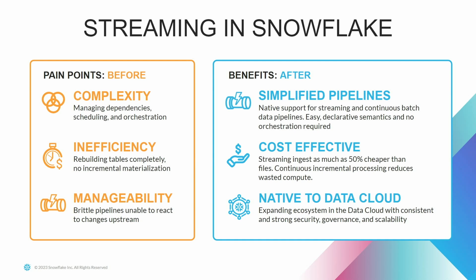That's why we built a simplified data pipeline — no more silos between batch and streaming ingestion. Your data from files and your streaming row sets both come into Snowflake, managed by Snowflake governance, security, and privacy features, and it's cost-effective. Snowflake streaming for streaming applications from databases, apps, and Kafka brokers is as much as 50% more cost-effective than file ingestion. And this is all native to the Snowflake data cloud, with all that security, privacy, and functionality — such as replication support.